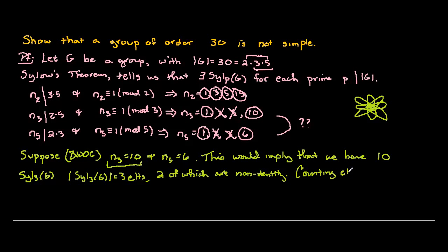If we count up the number of elements that we have, we've got 10 of these Sylow 3 subgroups, 2 non-identity elements in each one. That's 20 non-identity elements. In addition, we have the identity element, so this accounts for 21 elements so far. Those 21 elements are captured in these Sylow 3 subgroups.